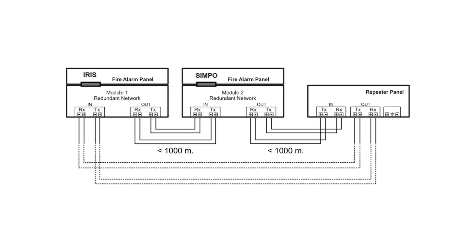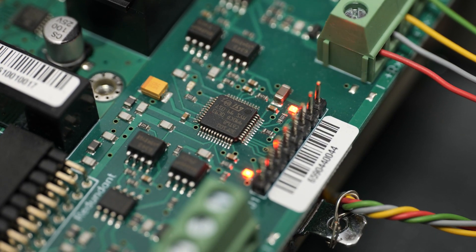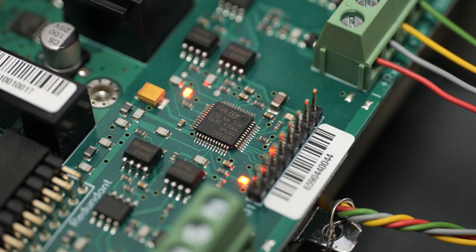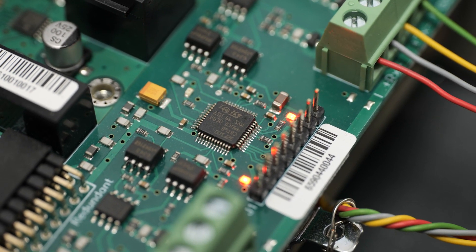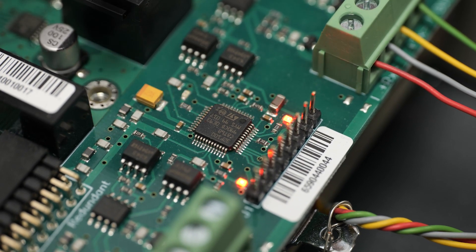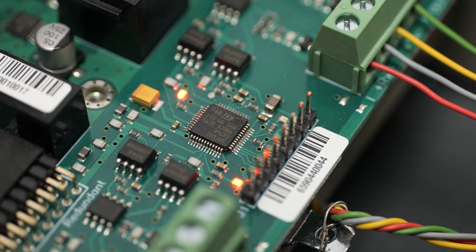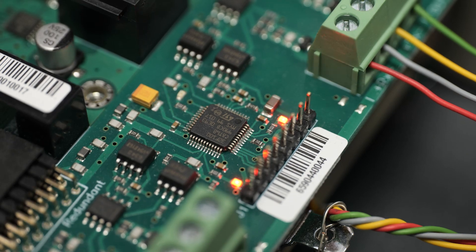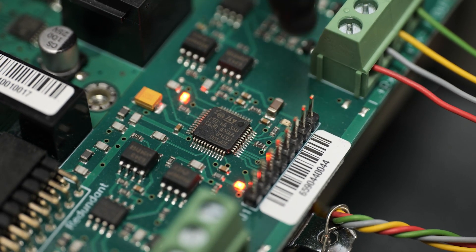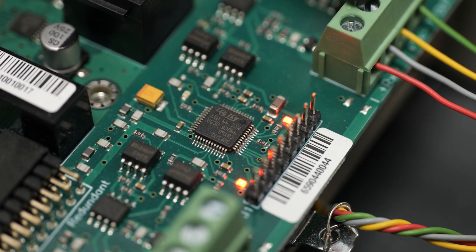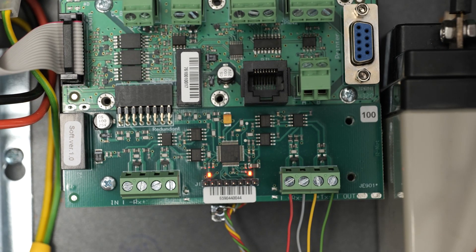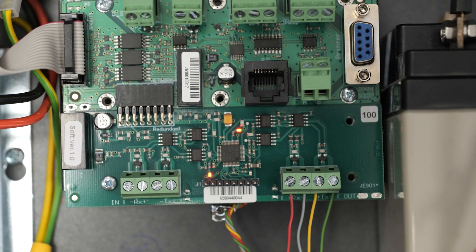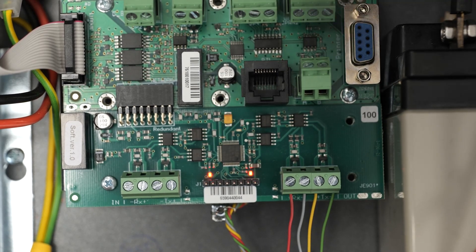It is important to know that the maximum cable length between two RS485 network models is 1000 meters. There are also three LED indicators used for connection quality status. The one on the top is for connection between the redundant model and the panel itself, while the other two LEDs indicate the connection with the other panels in the network. A blinking LED means the connection is good, and if the LED is continuously lit there is no connection established.